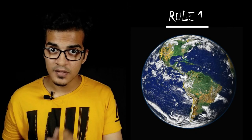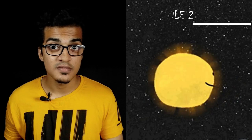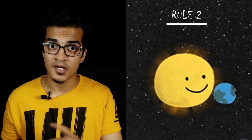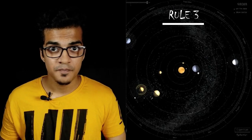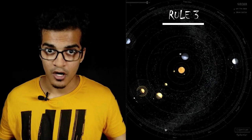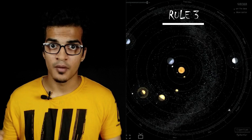To follow all three rules and be classified as a planet, the definition requires: first, the object must be round; second, it must orbit the sun; and third, it must be dominant in its orbit.